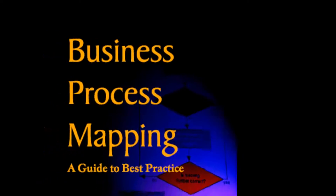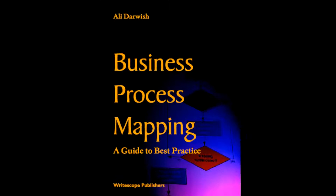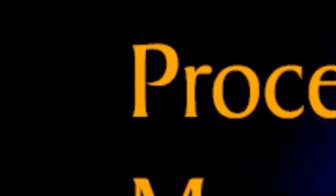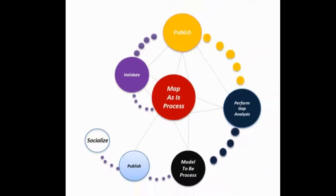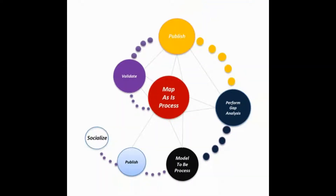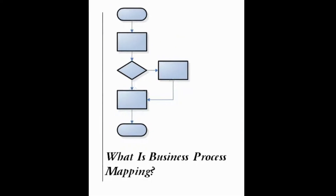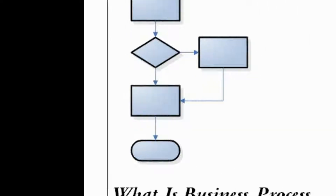Business Process Mapping: A Guide to Best Practice. A process map communicates the process to those who are meant to use it. It provides a pictorial representation of the process to enable them to navigate through it with ease and clarity, and with minimal variation of interpretation.